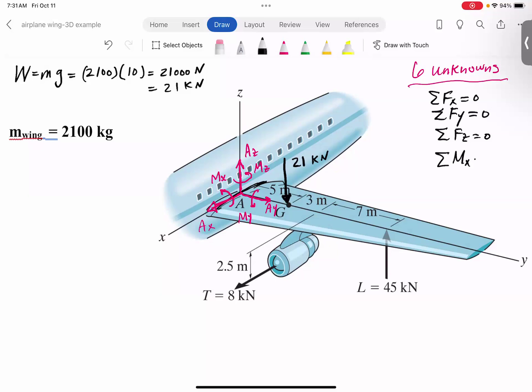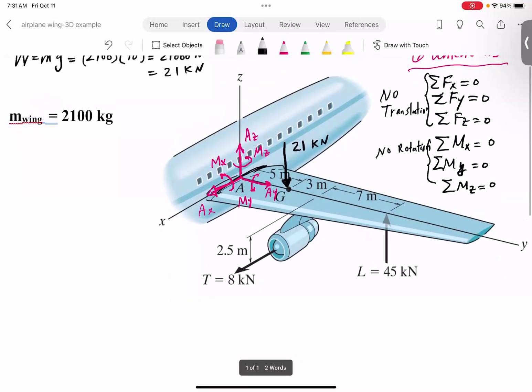And to maintain no rotation, we have to make sure that sum of the moment about the three axes, X, Y, and Z is equal to zero. So that means no rotation. So this is no translation and no rotation. So it's really a simple, trivial problem, guys. Let me show you how you can solve this problem.